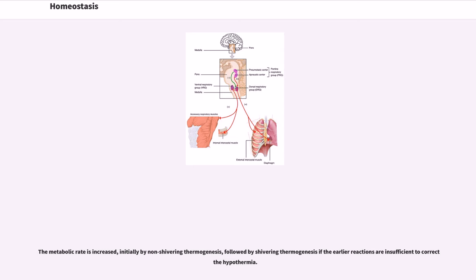The subcutaneous limb veins are tightly constricted, not only reducing heat loss from this source, but also forcing the venous blood into the counter-current system in the depths of the limbs. The metabolic rate is increased, initially by non-shivering thermogenesis, followed by shivering thermogenesis if the earlier reactions are insufficient to correct hypothermia.